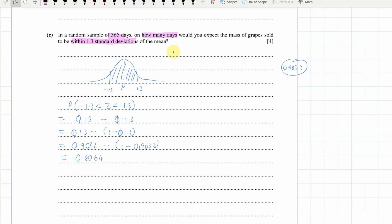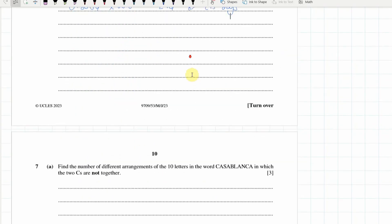Now, that's the probability that one day would be within 1.3 standard deviations, so we just, now, go 0.8064 multiplied by the 365 days that we have. What does this give us? 0.8064 times 365, and we're dealing with 294.336, so 294 or 295 days.